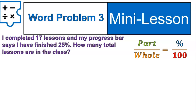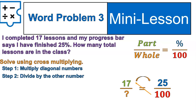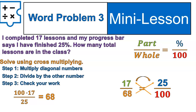Let's do one more word problem — word problem lessons tend to go long. I completed 17 lessons and my progress bar says I finished 25 percent. How many total lessons are in the class? We set this one up earlier. Now we solve using cross-multiplying: 17 times 100 divided by 25 gives us 68. Double-checking: 17 times 100 is 1700, and 25 times 68 is also 1700. That is correct. There are 68 total lessons.